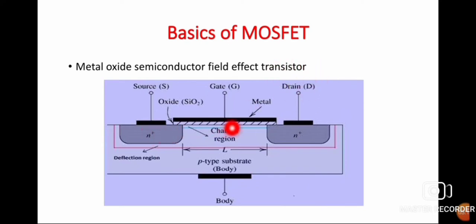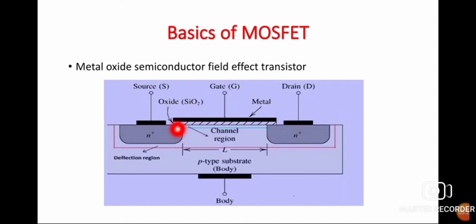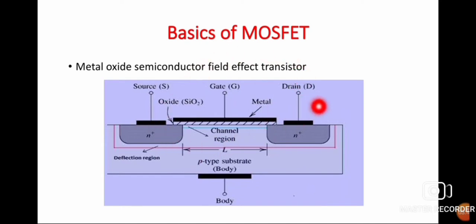Over the substrate, an oxide layer is given — the SiO2 layer is given on the channel region. This is the channel region over which, on the outside, the oxide layer is given. On the oxide layer, a metal layer is given, from which one terminal is taken out, and that is known as the gate. So this is the construction of MOSFET.